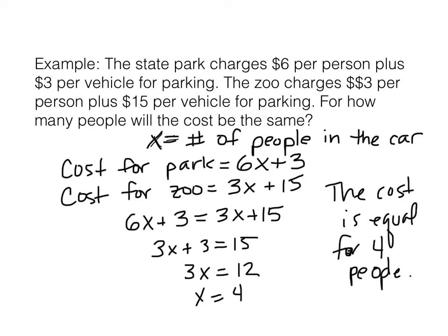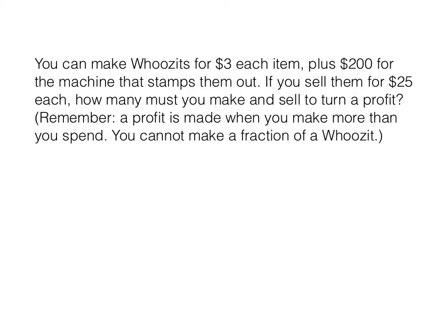Let's try one that's similar. You can make who's-its for $3 each item, plus $200 for the machine that stamps them out. What's a who's-it? Doesn't matter. If you sell them for $25 each, how many must you make and sell to turn a profit? Remember, a profit is made when you make more money than you spend. And you cannot make a fraction of a who's-it — that's going to be important at the end of this problem.